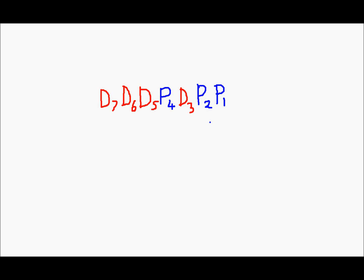Hamming code consists of data bits and parity bits. Every 2 raised to the nth bit is a parity bit. So 2 raised to 0, that is 1, so the first bit is a parity bit. 2 raised to 1, that is 2, so the second bit is a parity bit. 2 raised to 2, that is 4, so the fourth bit is a parity bit.